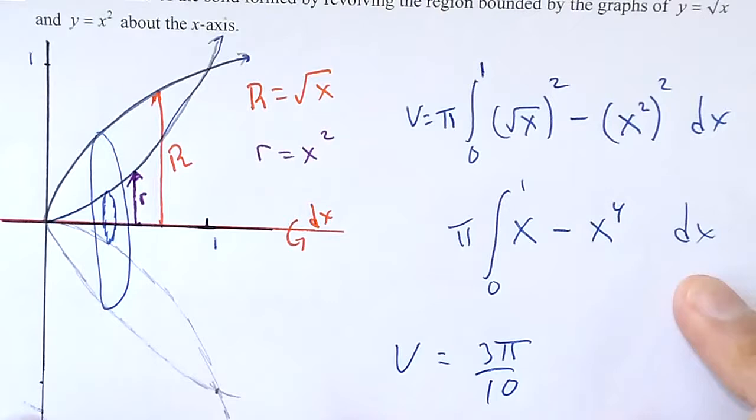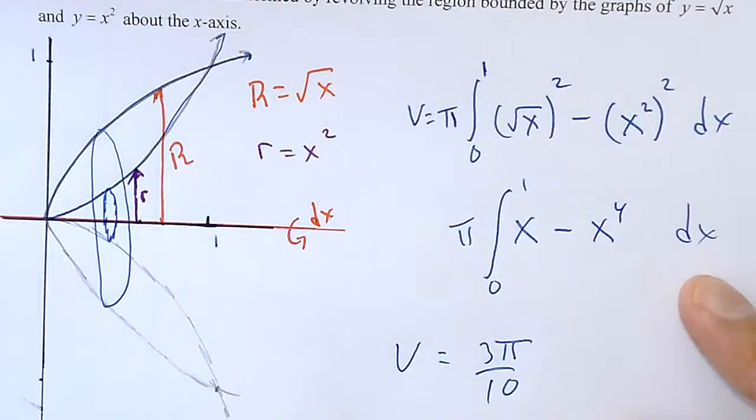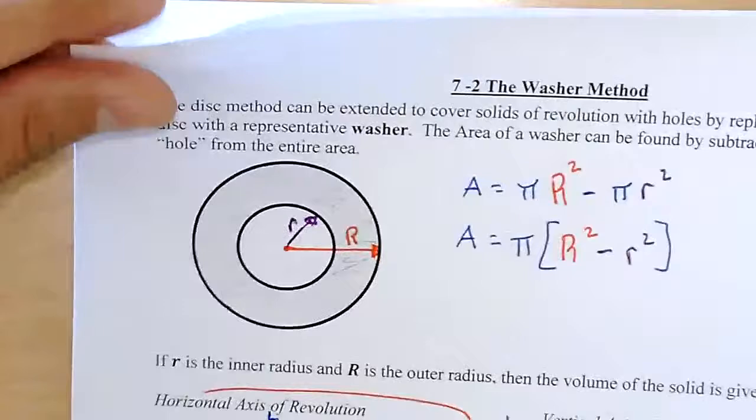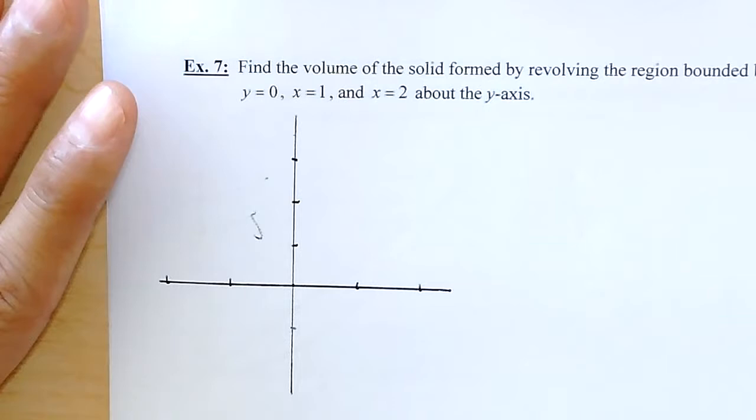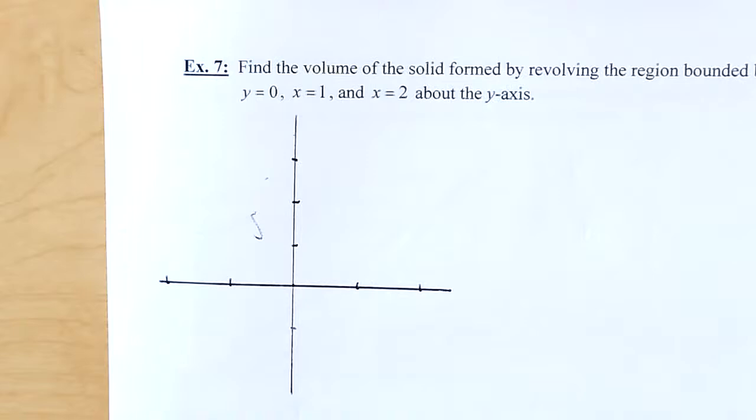Verify it and make sure you're getting 3pi over 10. That was a horizontal axis of revolution — I was in dx. Now let's find a vertical axis of revolution. I'm asked to graph y equals x squared minus 1, y equals 0, x equals 1, and x equals 2, and rotate about the y-axis.